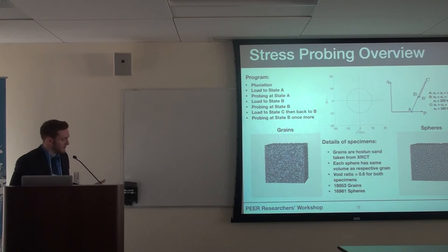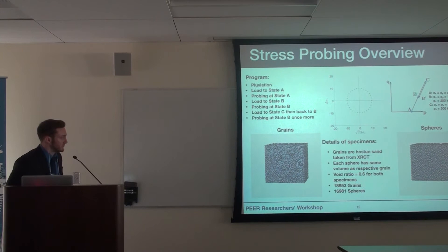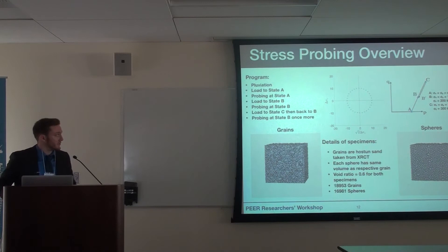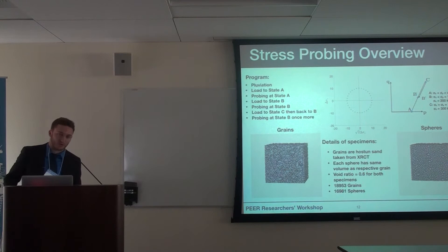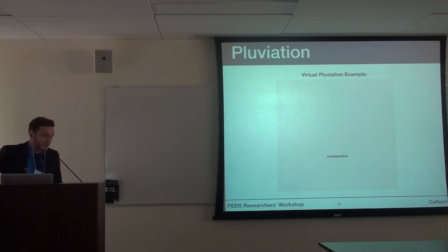We made two specimens: one made up of all host sand grains and another made up of all spheres, so we can see just how much shape plays an effect. Outside of shape, the specimens are extremely similar — they have the same void ratio, a very similar number of grains, and are both created the same way by virtual pluviation. They are loaded to 100 kilopascals in every direction and probed at that first state, called State A. Then they're loaded to State B with some deviatoric loading and probed again. To look at loading history, they're loaded to State C and then brought back to State B, which we call State B prime.